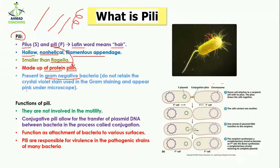The pili are normally present in gram-negative bacteria. Gram-negative bacteria are the bacteria which do not retain the crystal violet stain during the gram staining method, and because of this reason they appear pink under the microscope. This is how you can distinguish gram-positive bacteria from gram-negative bacteria, and gram-negative bacteria actually contain pili structures.